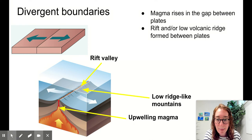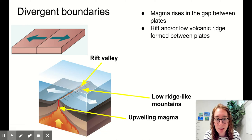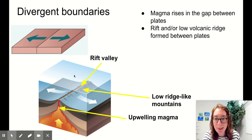Because of that rising magma, it will actually force the plates upward a little bit, and we'll get a rift and a low volcanic ridge forming between the two plates. So we have a rift valley in the space where the two plates are separating. But we also have a low volcanic ridge because that rising magma bubbles up, flops over, and forms a little mound — more magma bubbles up, flops over, forms an even bigger mound — until we get a volcanic ridge forming between the two plates.